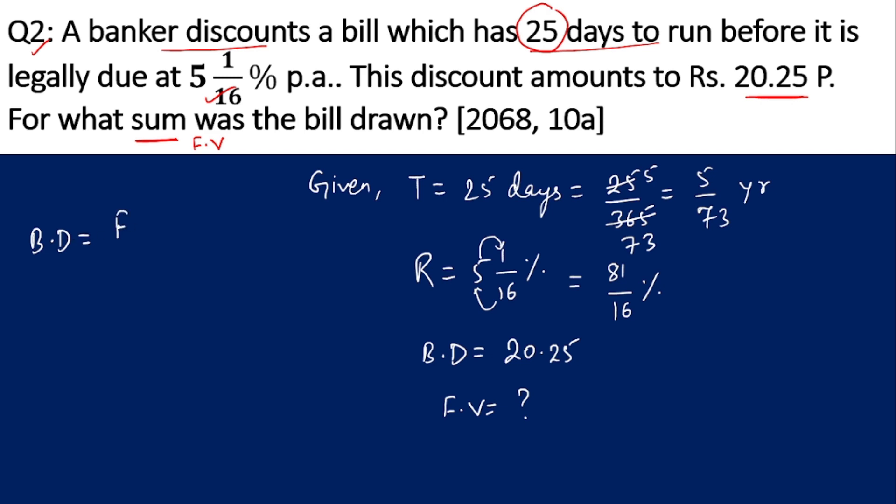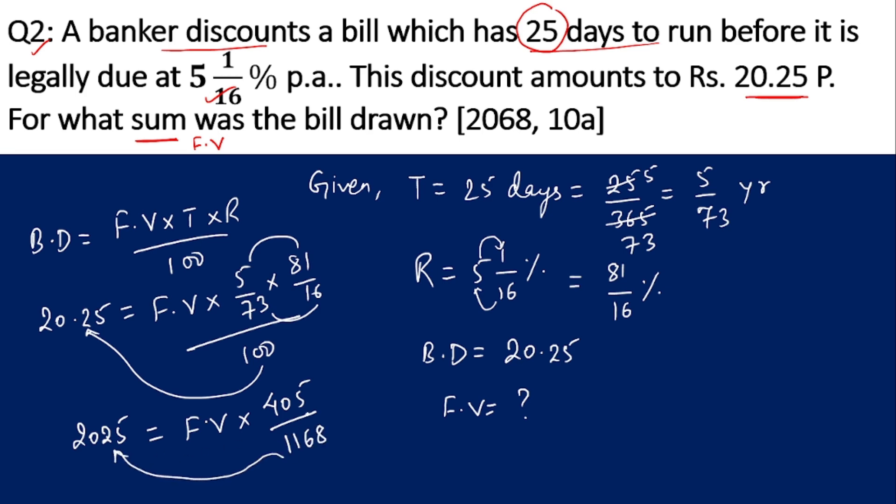We use the banker's discount formula: BD equals FV times T times R divided by 100. Putting the values: 20.25 equals face value times 5/73 times 81/16 divided by 100. Multiplying 20.25 by 100 removes the decimal, giving 2025. This equals FV times 5 times 81, which is 405, divided by 73 times 16, which is 1168. So FV equals 2025 times 1168 divided by 405. Therefore, FV is equal to rupees 5840. That's the answer.